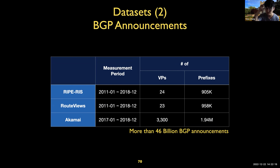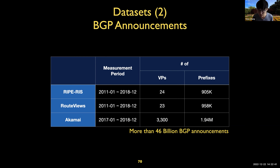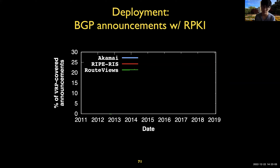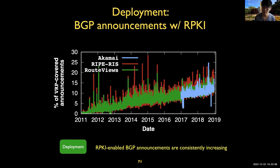Now we have the RPKI objects as the ground-truth dataset. The question becomes: how many BGP announcements out there can be verified using RPKI, and how many of them are actually valid? We collected all the BGP announcements from public collectors like RouteViews and RIPE RIS, and also collaborated with one of the largest CDN companies, Akamai, to collect as many BGP announcements as possible. The percentage of BGP announcements covered by RPKI is also increasing, but only about 20% of BGP announcements can be verified using RPKI. The last snapshot is from 2019, so coverage is likely much greater now.